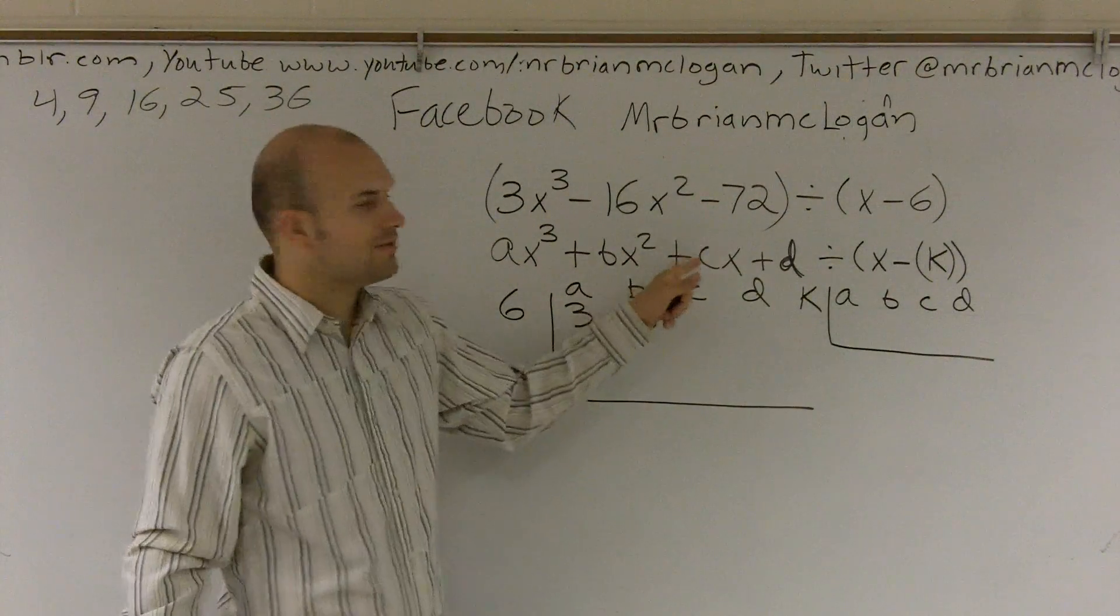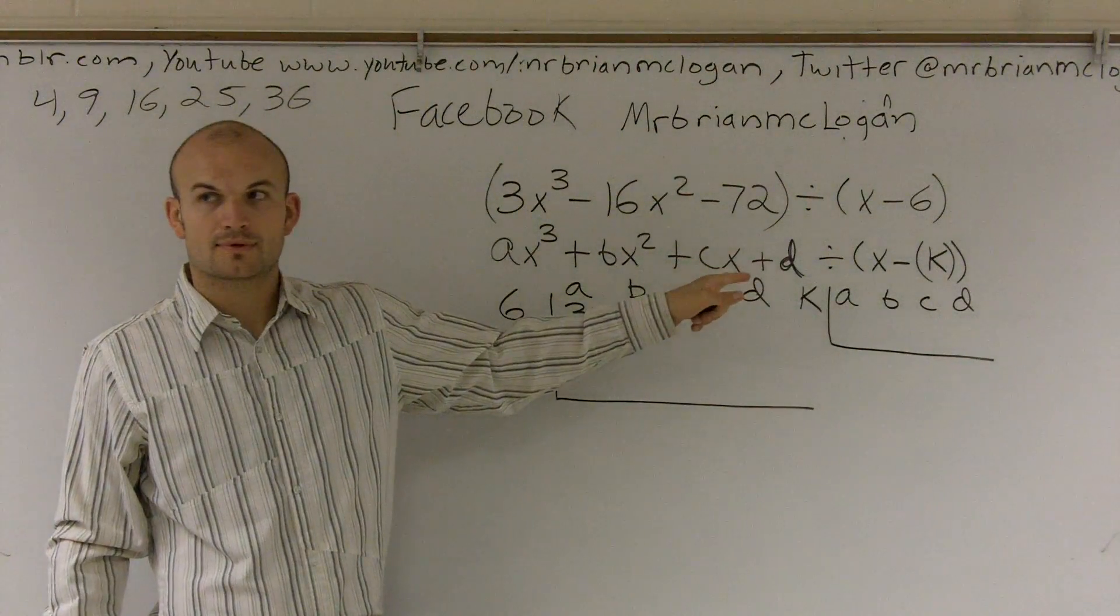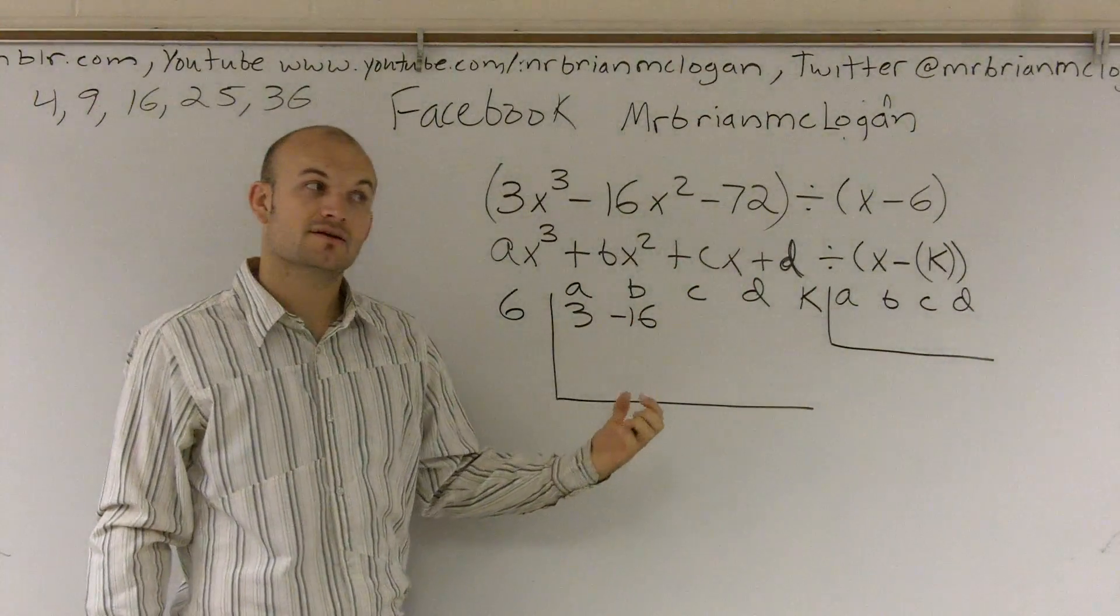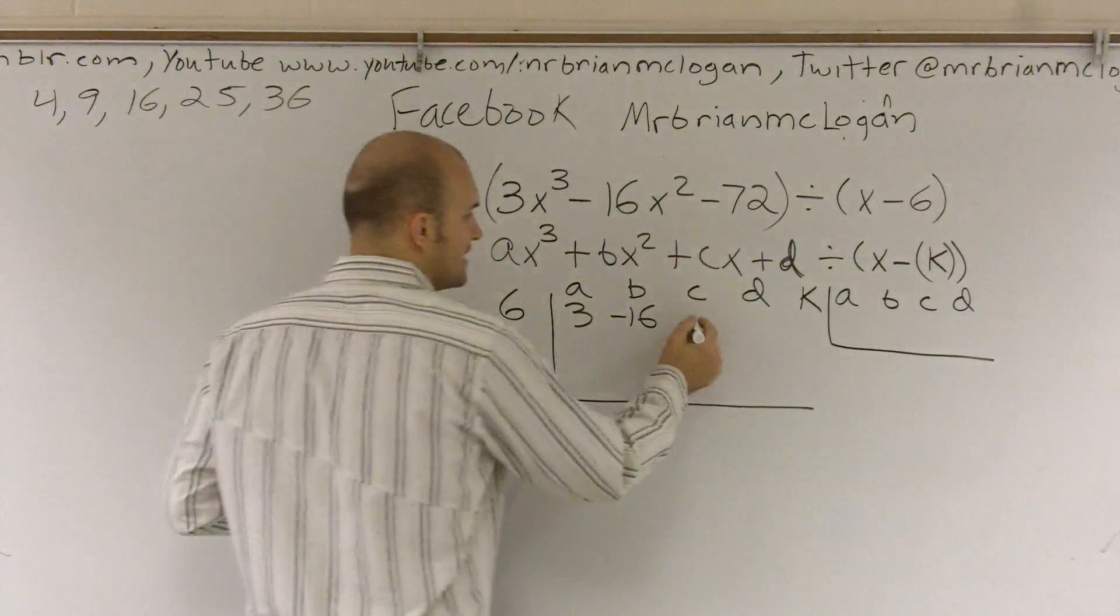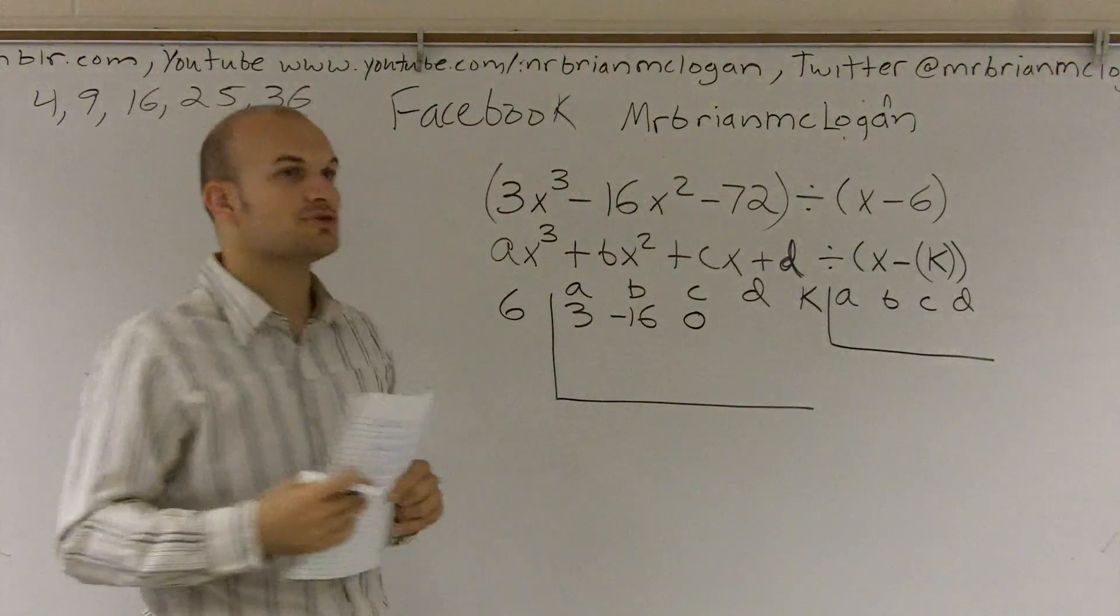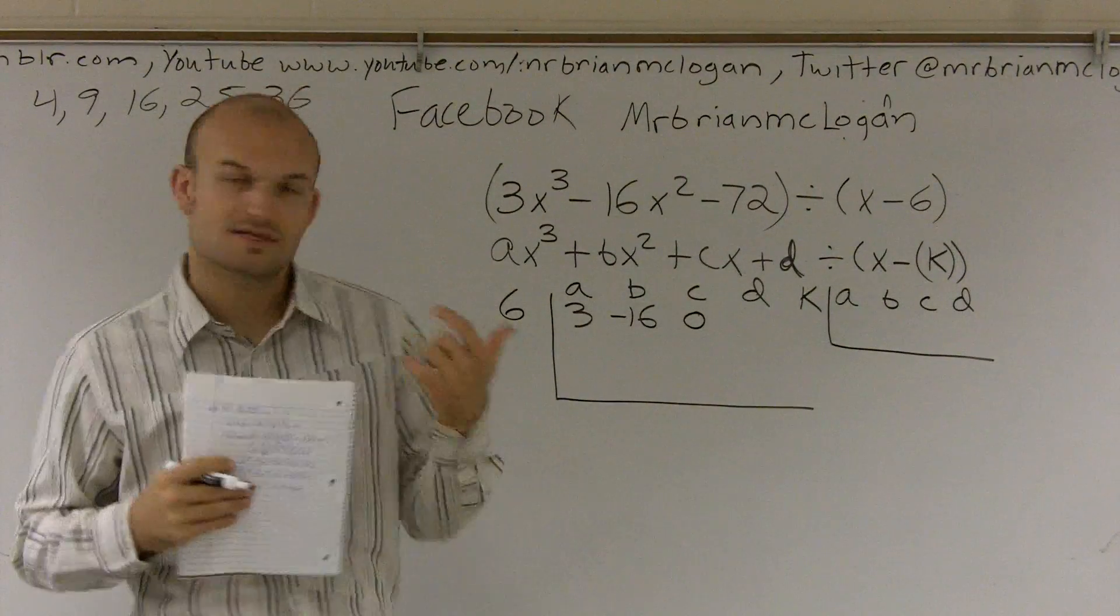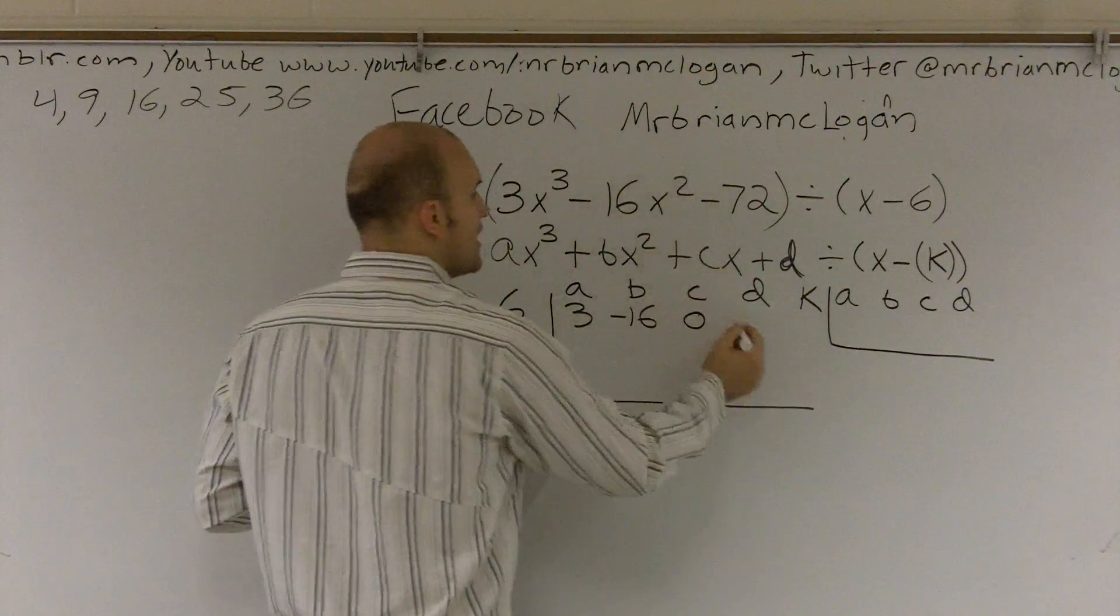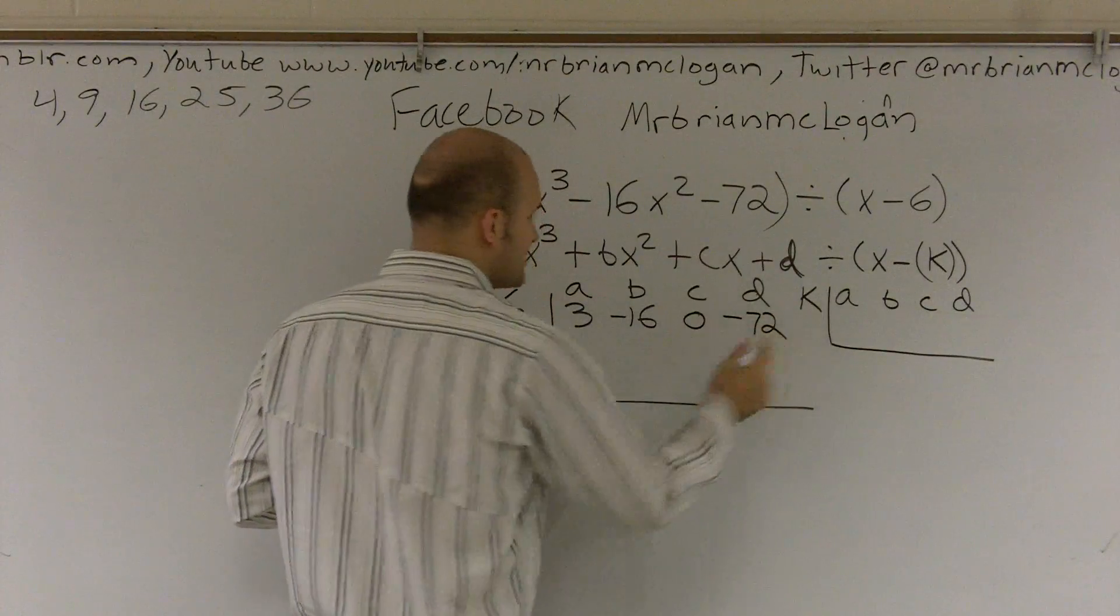Our c, we don't have a c term, do we? So just like long division, if you don't have that term, you have to put in a zero. We have to have a placeholder for that. Okay? That's a big mistake that allows us to miss. And then we also have our constant, which is negative 72.